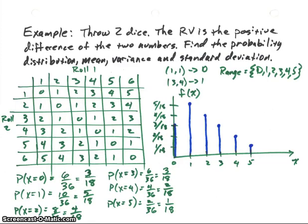Let's look at an example. In this example we're going to throw two dice, and the random variable is the positive difference of the two numbers. So we throw the dice, see what the two numbers are, subtract them to get a positive value, and that'll be the result. We'll find the probability distribution for this random variable, then calculate the mean, the variance, and the standard deviation.